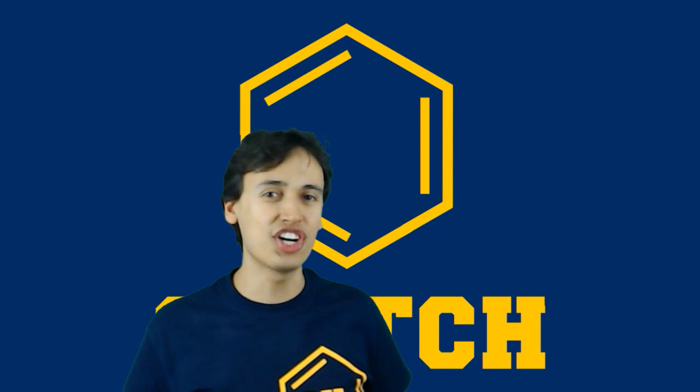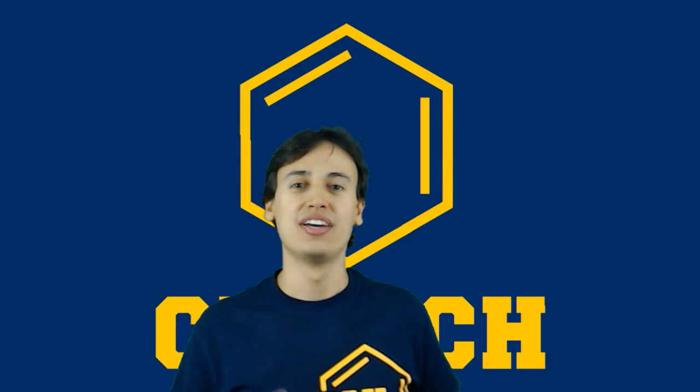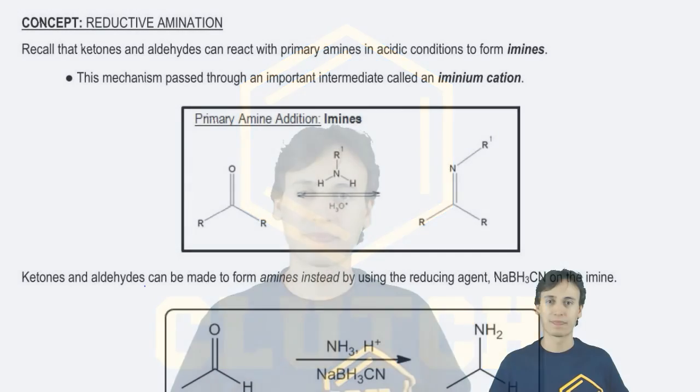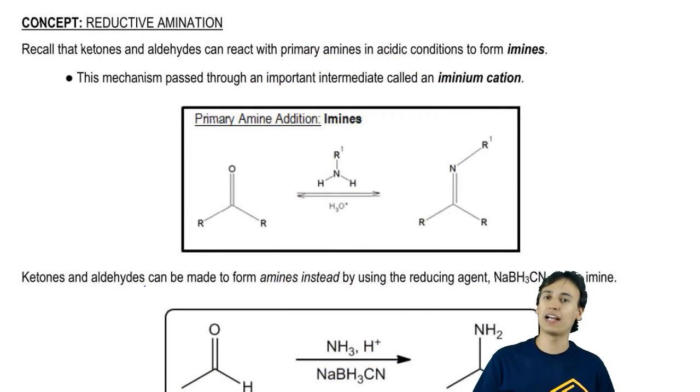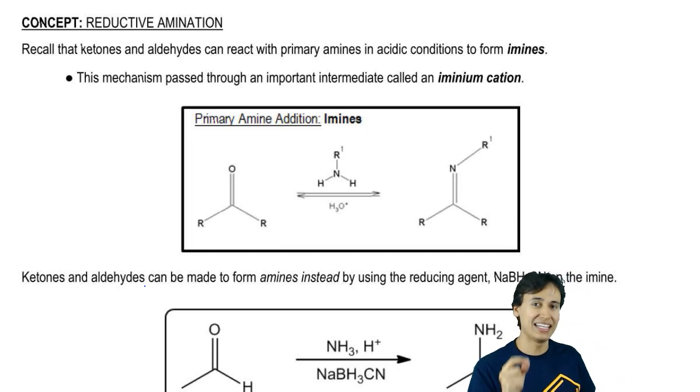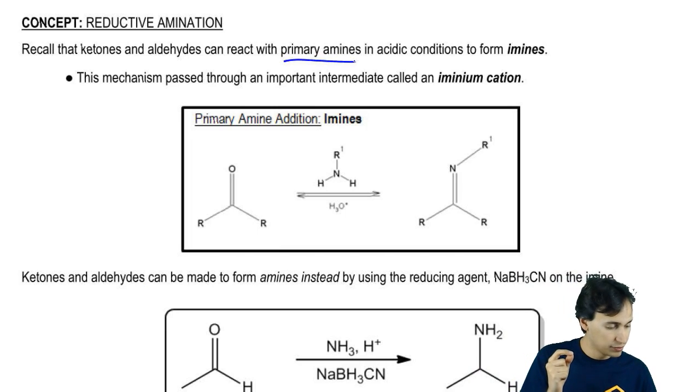Hey guys. In this video, we're going to cook up a really important reaction called reductive amination. Recall back to your ketones and aldehydes section of the text that ketones and aldehydes, when reacted with a primary amine in an acidic environment, what would you get? You would get the functional group called an imine.